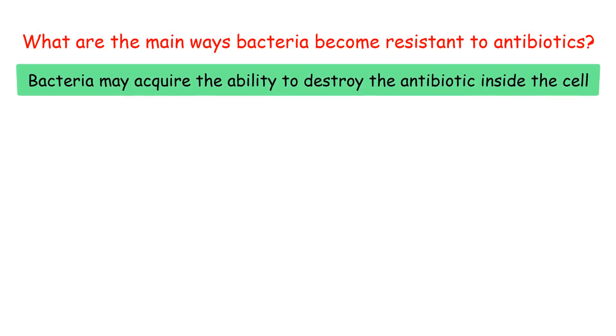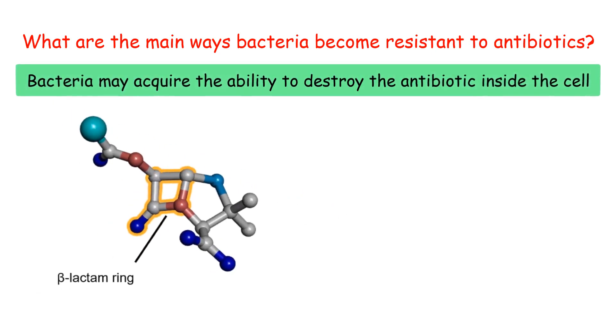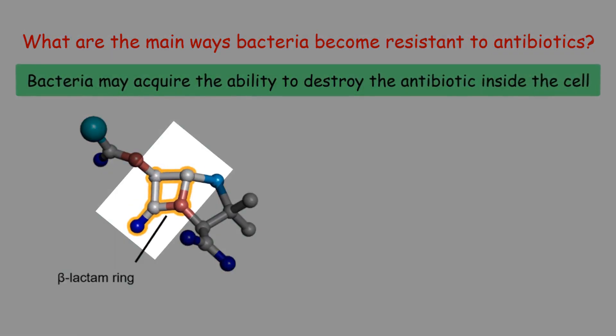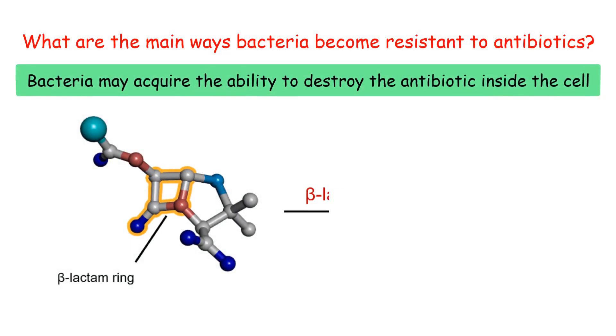Second, bacteria may acquire the ability to destroy the antibiotic inside the cell. For example, beta-lactam rings in some antibiotics are what make the antibiotics capable of killing bacteria. However, some bacteria acquire genes that code for beta-lactamases, which are enzymes that can degrade beta-lactams.